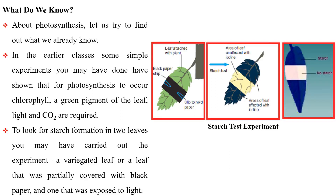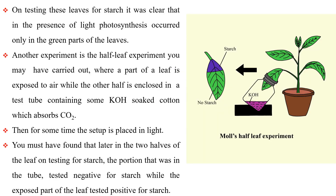What do we know about photosynthesis? Let us try to find out what we already know. In earlier classes, some simple experiments you may have done have shown that for photosynthesis to occur, chlorophyll — a green pigment of the leaf — light, and carbon dioxide are required. To look for starch formation, you may have carried out the experiment using a variegated leaf or a leaf partially covered with black paper and one that was exposed to light. On testing these leaves for starch, it was clear that photosynthesis occurred only in the green parts of the leaves in the presence of light.